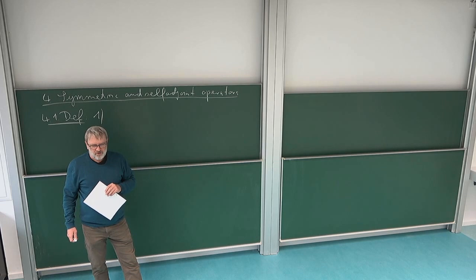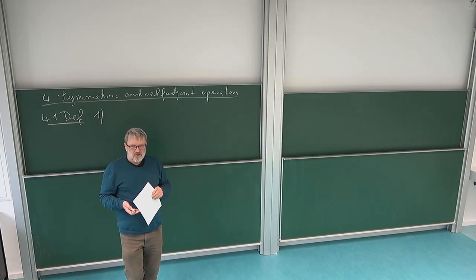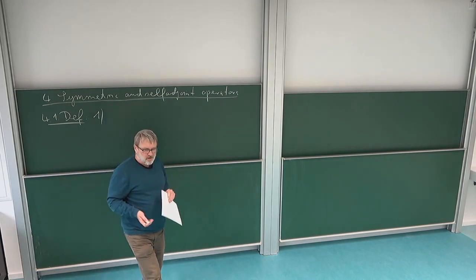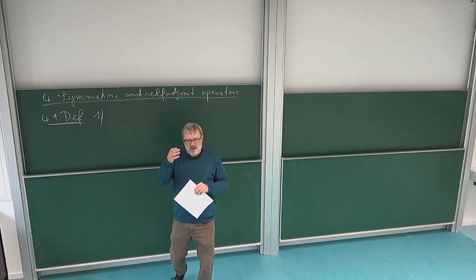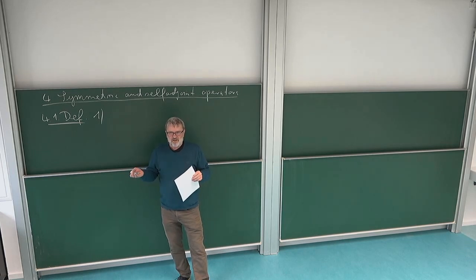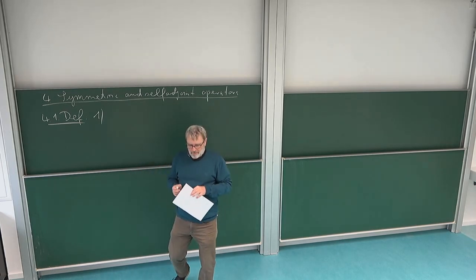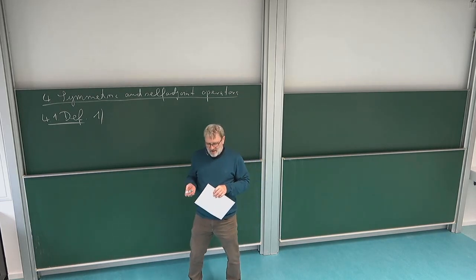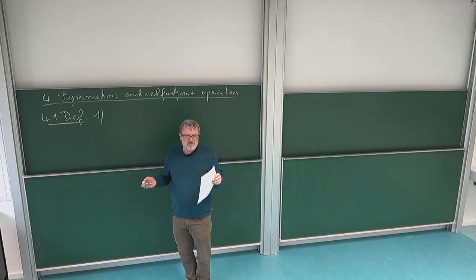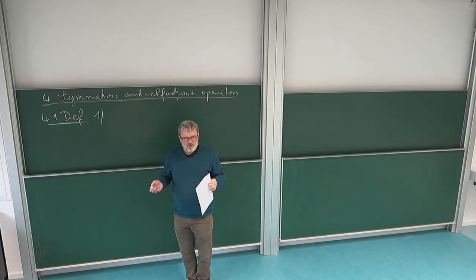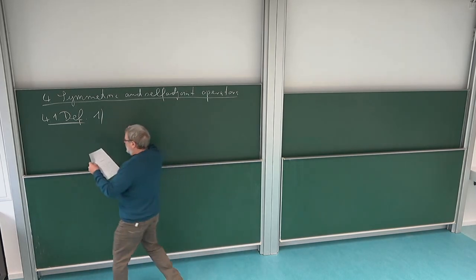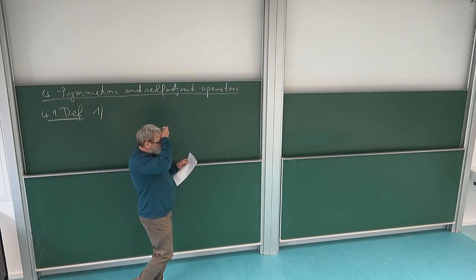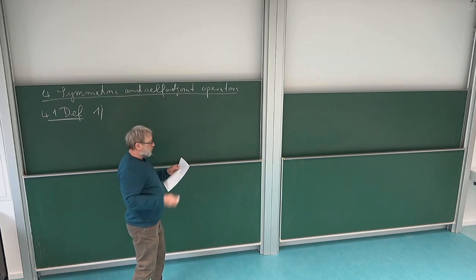Maybe the most naive definition is that you just write down what it means to be self-adjoint: that you can bring the operator from one side in a product to the other. In the case of unbounded operators, you cannot apply your operator to any element in the Hilbert space, so you just require that this is true for all vectors in the Hilbert space for which it makes sense. And that's what we are going to call symmetric.